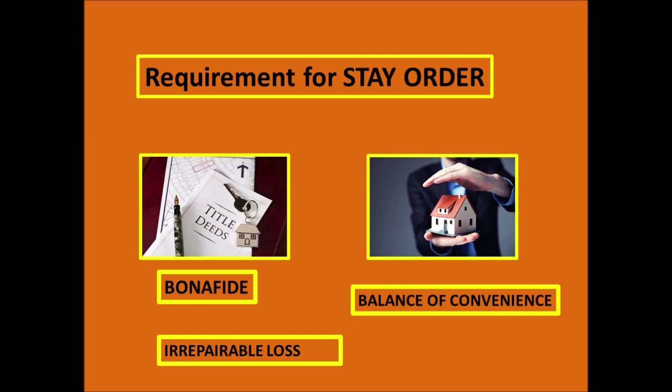Third, and the most important point, is irreparable loss. If a sale takes place, if construction happens, or if damage is done — can that loss be undone or compensated? These are the three things you must present to the court, and when all three are established in your case, you will get a stay order.